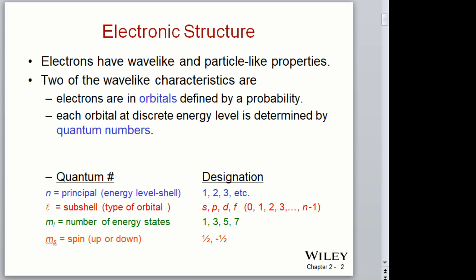For the s level you have 1s, 2s, 3s, etc., and for the p orbital you have 2p, 3p, and so on. The d and f sub-orbitals get a lot fancier. The m sub-l is the number of energy states within each subshell: the s orbital has one energy state, the p sub-orbital has three energy states, and the d sub-orbital has five energy states.